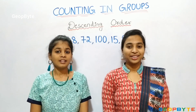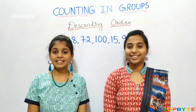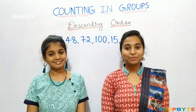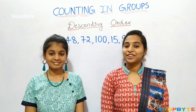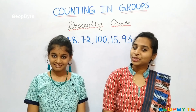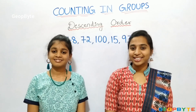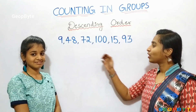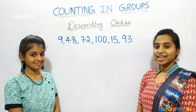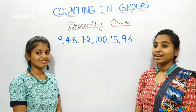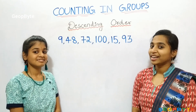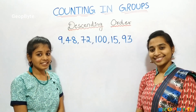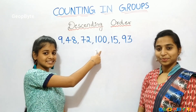Now, let us get into the topic: descending order. Hey kids, descending order means arranging the numbers from the largest number to the smallest number. Now, let us see with an example. See kids, I have an arrangement of numbers. Let us arrange them in descending order. Which is the largest number? Yes, correct answer — 100 is the largest number.